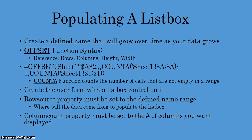First, what you would do is create a defined name that will grow over time as your data grows. The list box within the user form control — you want to display data that pertains to the data in your worksheet, which in most cases will have data added to it day in and day out. So you want to define a named range that is not confined to a certain cell, row, or column combination. To do this, we're going to use the OFFSET function and the COUNTA function.